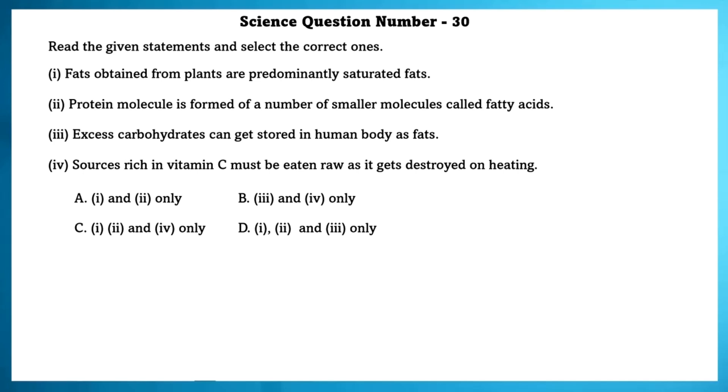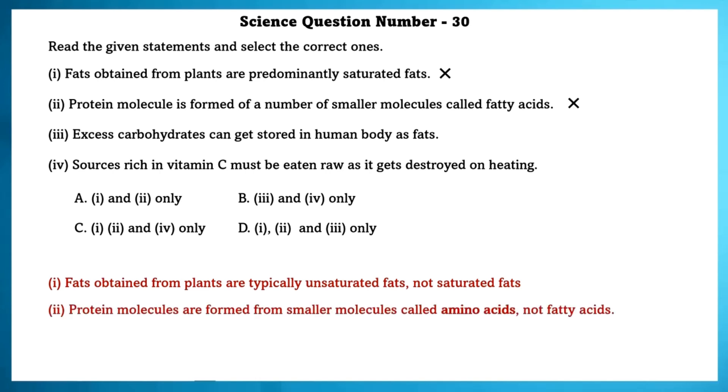Science question number 30. Read the given statement and select the correct ones. Fats obtained from plants are predominantly saturated fats. This is false. Fats obtained from plants are typically unsaturated fats, not saturated. Second one. Protein molecules is formed of a number of smaller molecules called fatty acids. Protein molecules are formed from smaller molecules called amino acids, not fatty acids. Third one. Excess carbohydrate can get stored in human body as fats. Yes, this is true. Sources rich in vitamin C must be eaten raw as it gets destroyed on heating. This is also true.